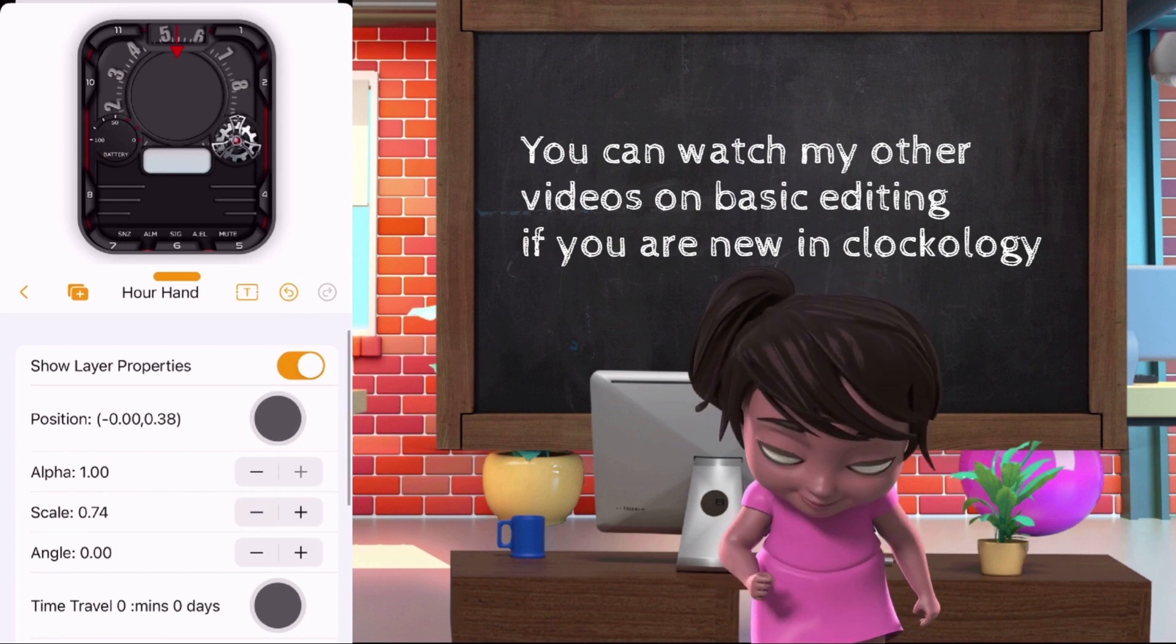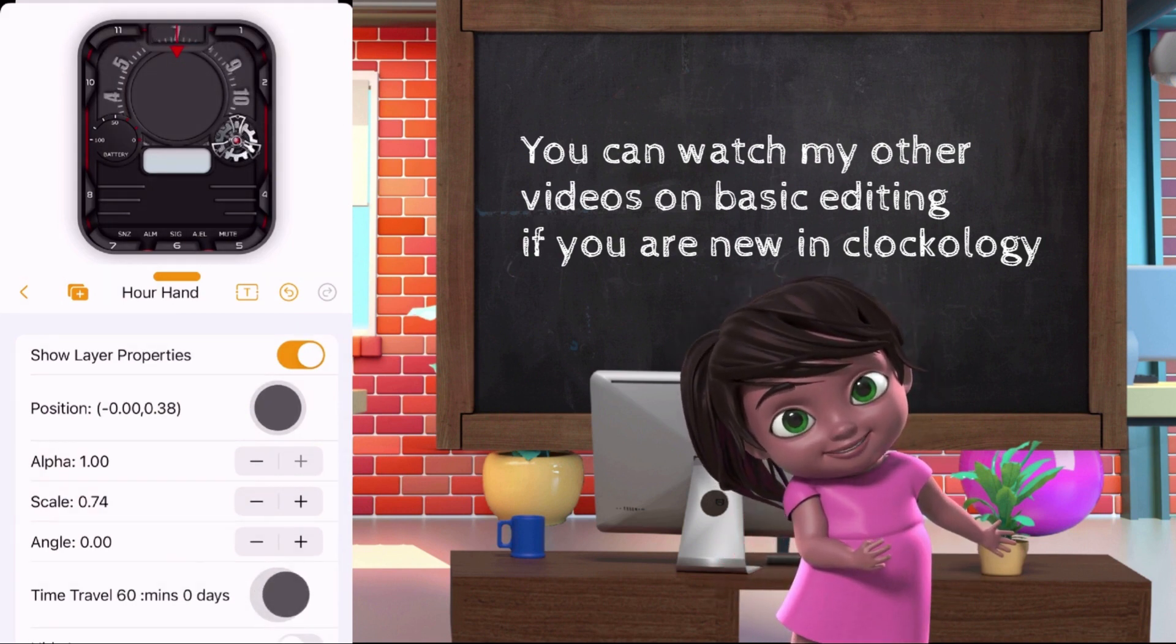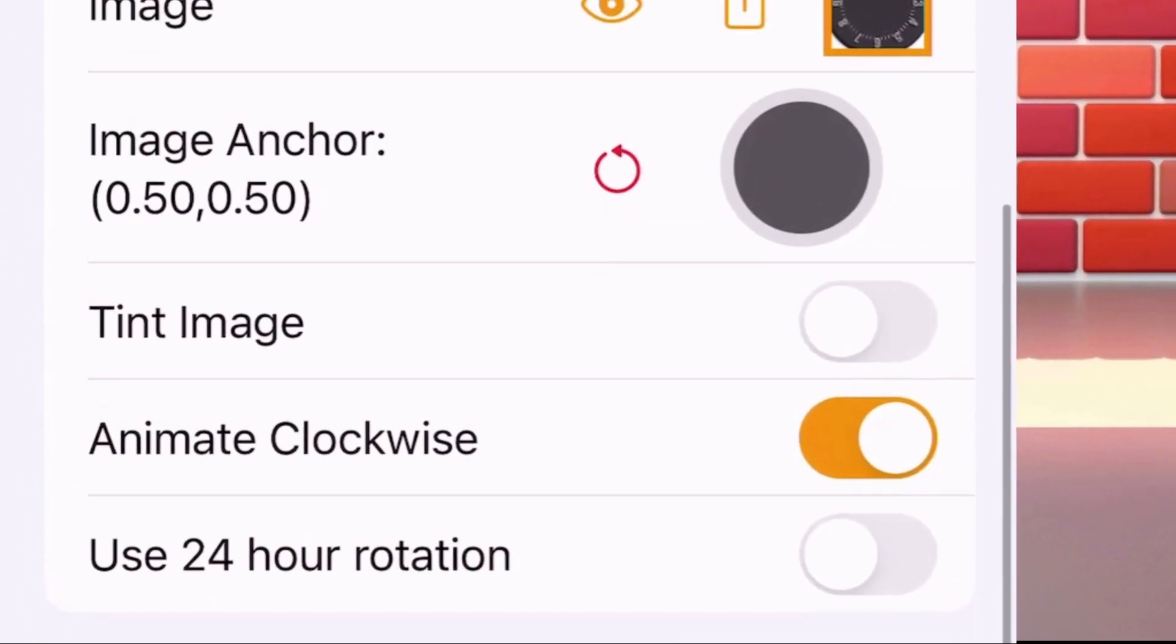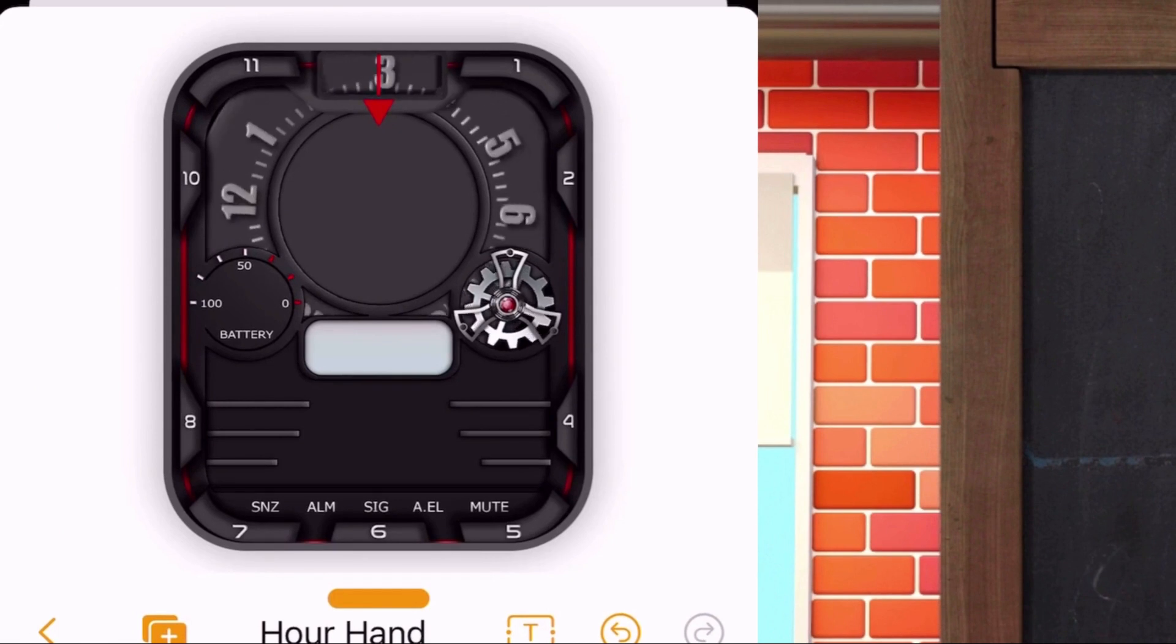You can check how your hour rotate by sliding the time travel. You also need to set if your design needs to animate clockwise or not. From the design I made, I need to turn off the animate clockwise. After setting up the hour, we do the same with our minute and seconds.